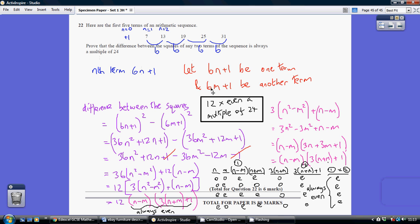And let's just let any other term be 6m plus 1. Now we've got to look at the difference between the squares of these two terms. So this bit in purple just does that. So we square each of these and we take one away from the other. So here's 6n plus 1 all squared, and here's 6m plus 1 all squared. Take one away from the other and we get the difference between the two squares.